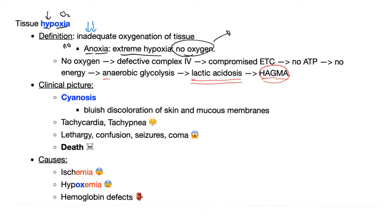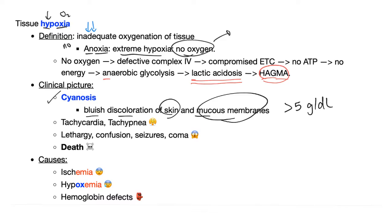Clinical pictures. First, cyanosis. The complete definition: bluish discoloration of the skin and mucous membrane that occurs when the amount of deoxyhemoglobin is greater than 5 grams per deciliter. Deoxyhemoglobin is hemoglobin that's not carrying oxygen. If you are decreasing oxygen delivered to the hemoglobin, you'll have less oxygen on hemoglobin, a high amount of deoxyhemoglobin — more than 5 g/dL — and that's when you get cyanosis.